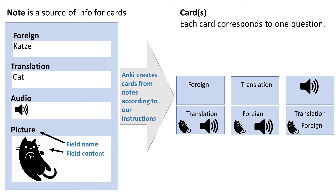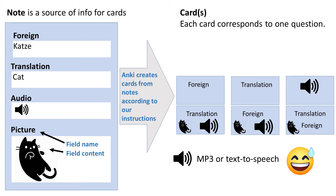The third card has audio at the front, so Anki will play the sound and your task is to answer what the word is and what it means. The sound can come from an mp3 file, but I personally use text to speech because I'm lazy.